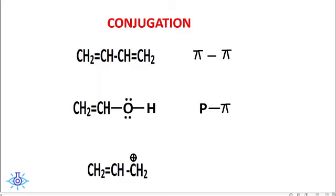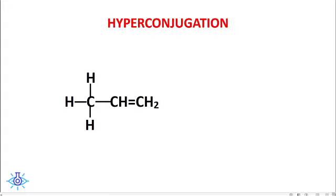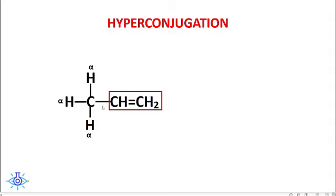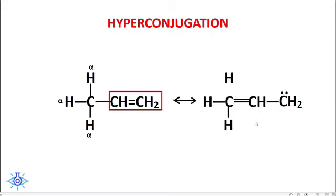Now let us learn about hyper conjugation. Propene has the structure CH₃-CH=CH₂. The carbon attached to the double-bonded carbon is called the alpha carbon, and the hydrogen atoms on the alpha carbon are called alpha hydrogens — there are three alpha hydrogens here. The C–H bond can shift, making C–C become a double bond instead of a single bond.